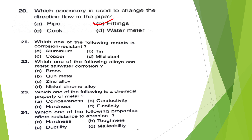Which one of the following metals is corrosion resistant — Aluminium, Tin, Copper, or Mild steel? The answer is option B — Tin.